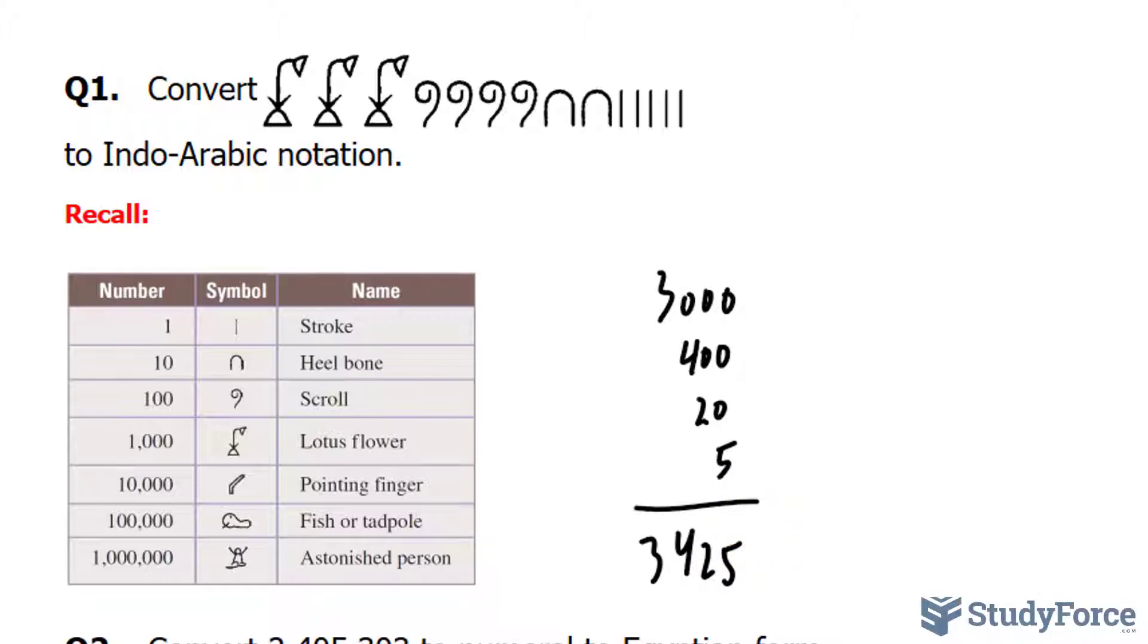Now what's interesting also about this question is the usage of the word Indo-Arabic notation. That's just a fancy way of describing the number system we use today, using symbols between zero and nine. Interestingly, it originated in India in the sixth or seventh century and was introduced to Europe through the writings of Middle Eastern scholars and mathematicians.